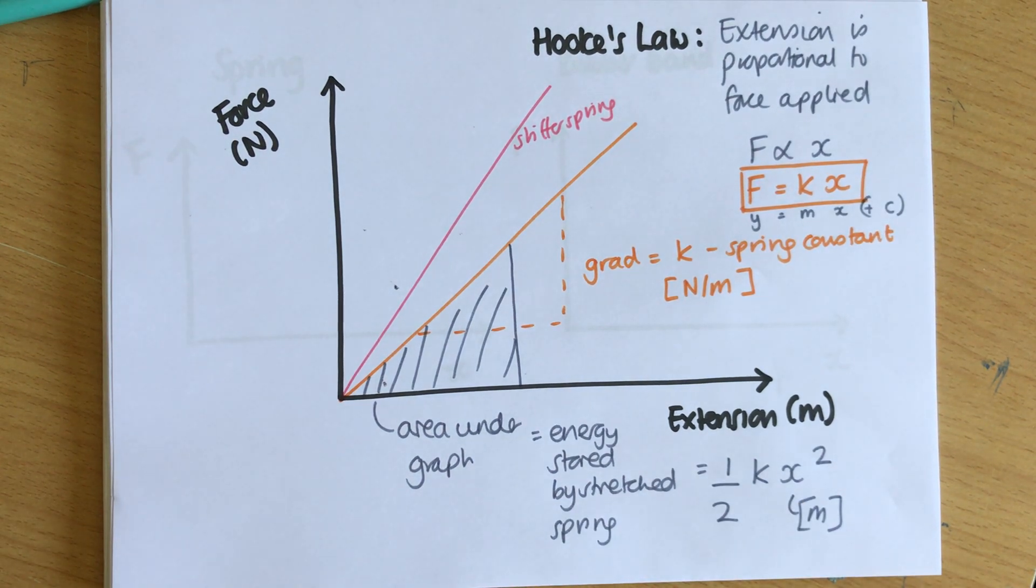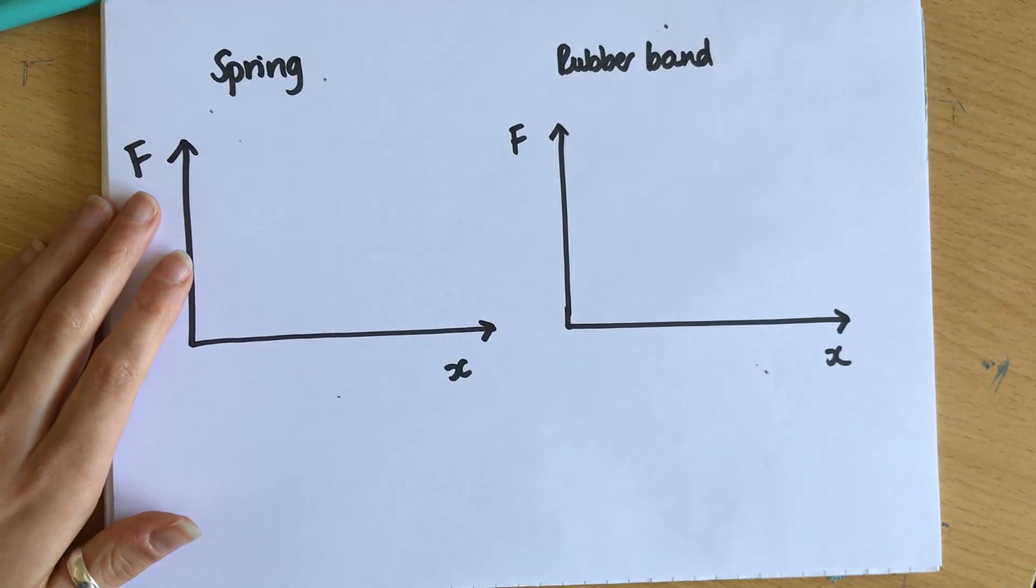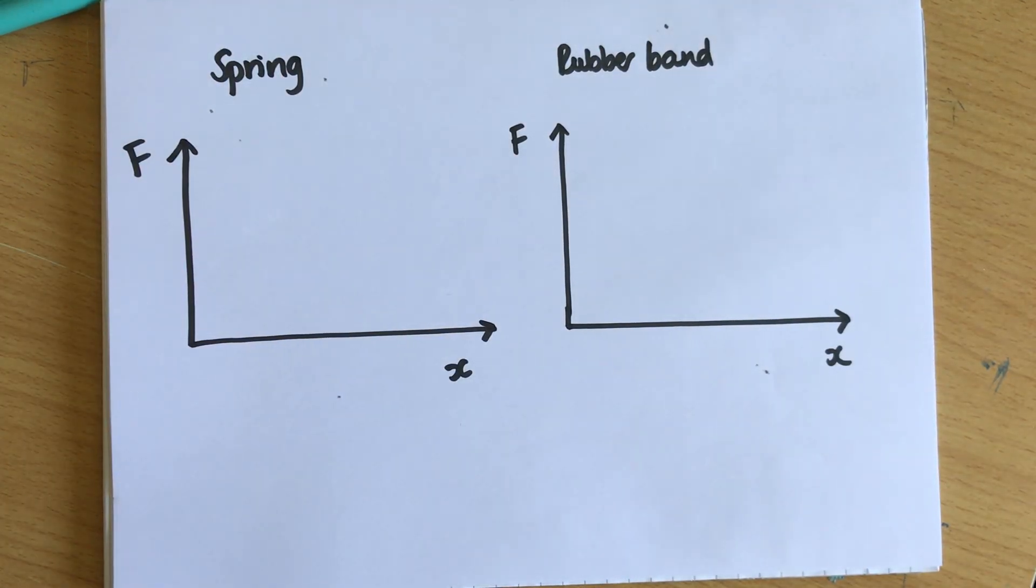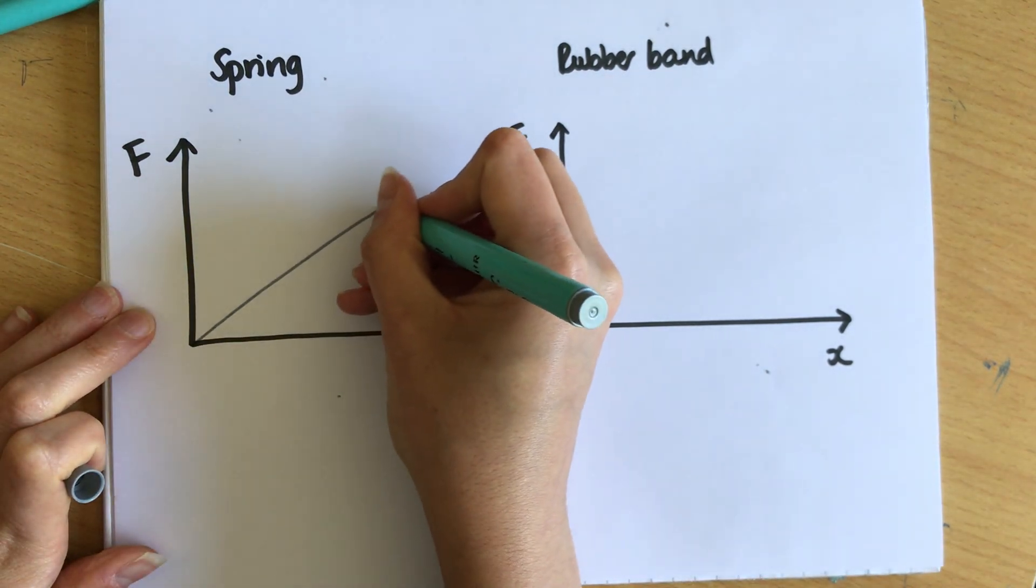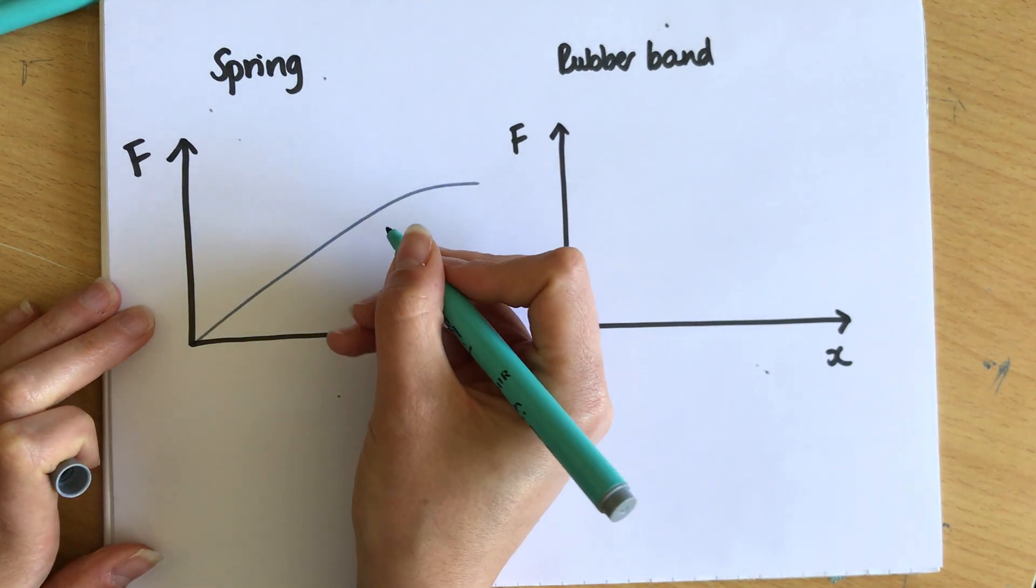Now I said before that springs obey Hooke's law and they do up to a point. If I carried on stretching that spring—you might have seen this before—you can over-stretch a spring. So it will go, go, go and then it might do this and it might start to curve.